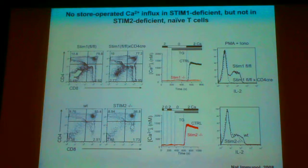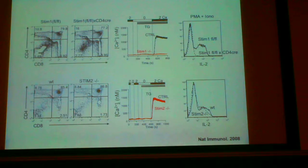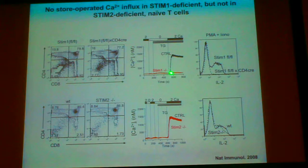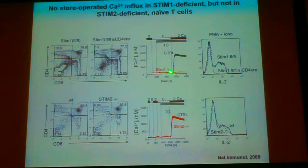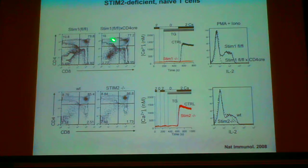I'm going to show you some data published in 2008 for your introduction. Naive STIM1-deficient T cells showed completely impaired store-operated calcium entry and IL-2 production, which is absolutely calcium-NFAT-dependent, but STIM1-deficient mice show normal thymic development.